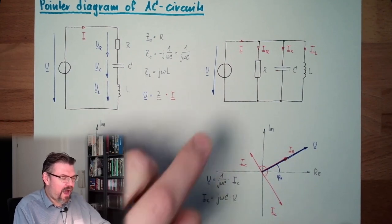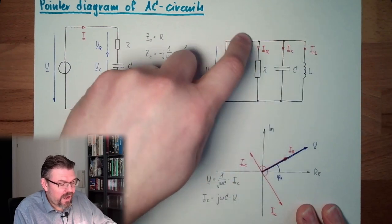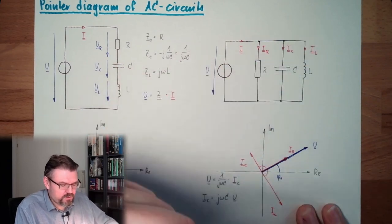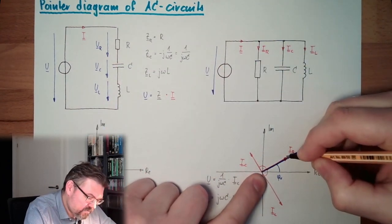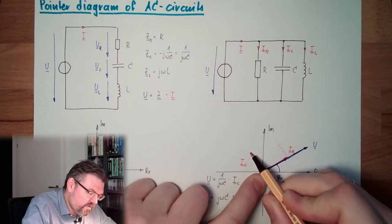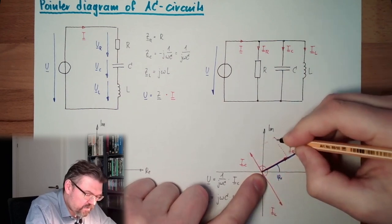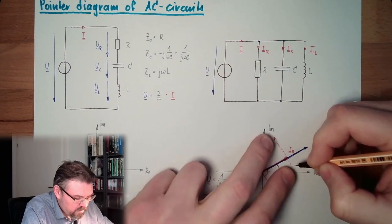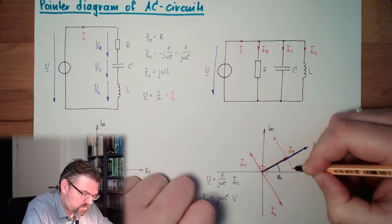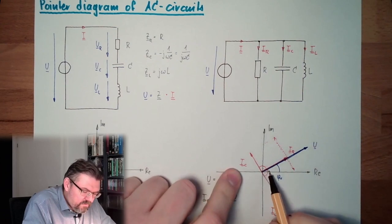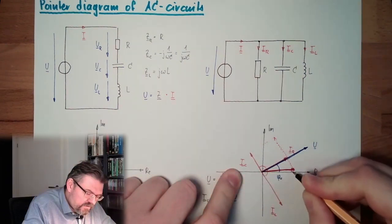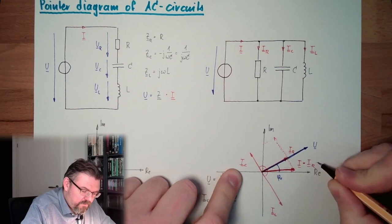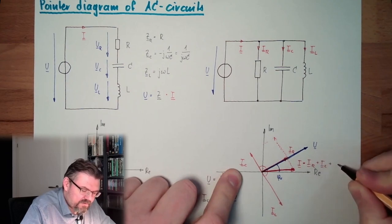And what is now I? I is the sum, node rule here, the junction rule. I is the sum, I equals IR plus IC plus IL. So let's do this, IR plus IC, so here, we're adding up as a vector. IC plus IL, so I'm down here. And here, this would be my I, which equals IR plus IC plus IL.